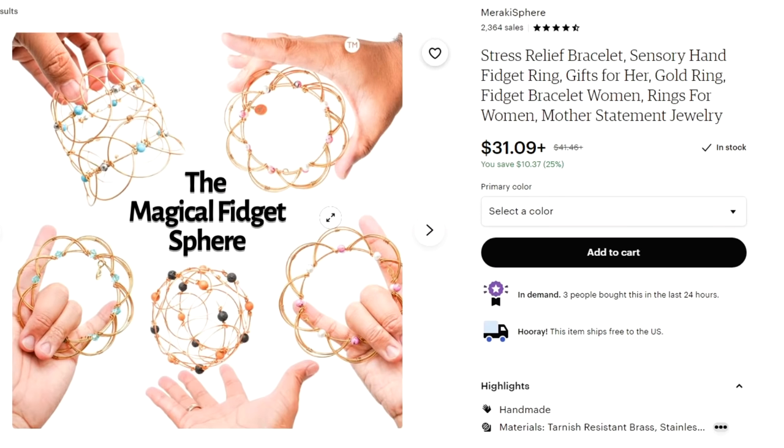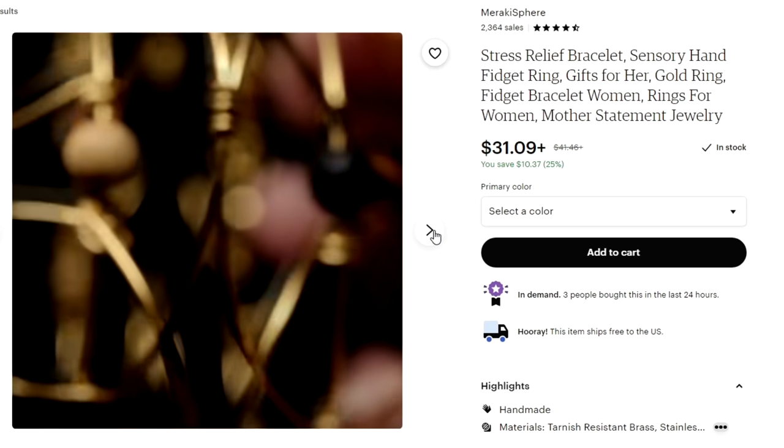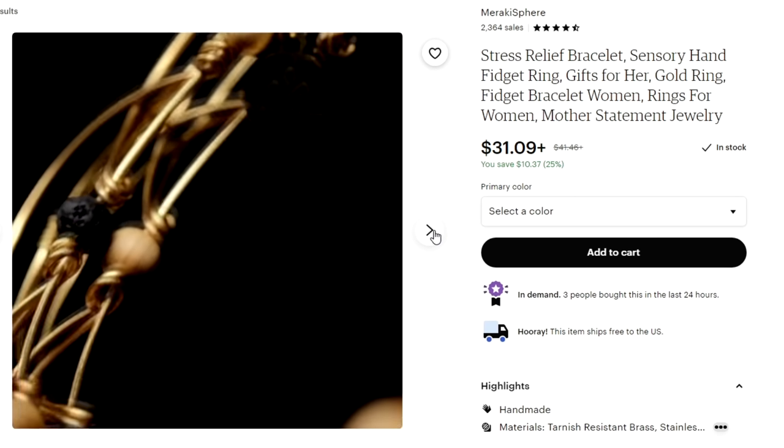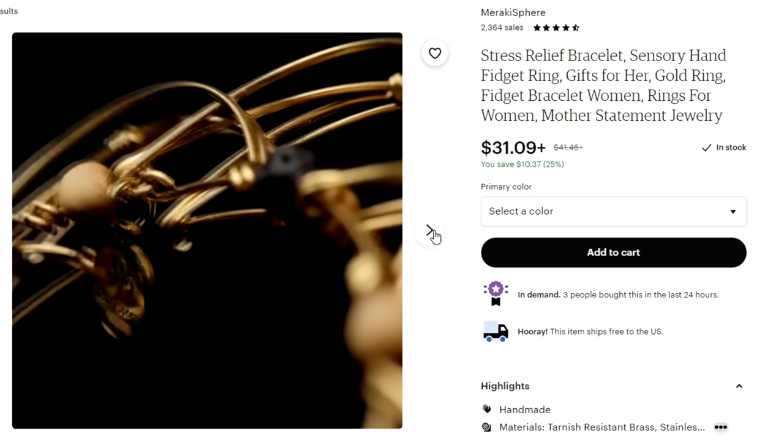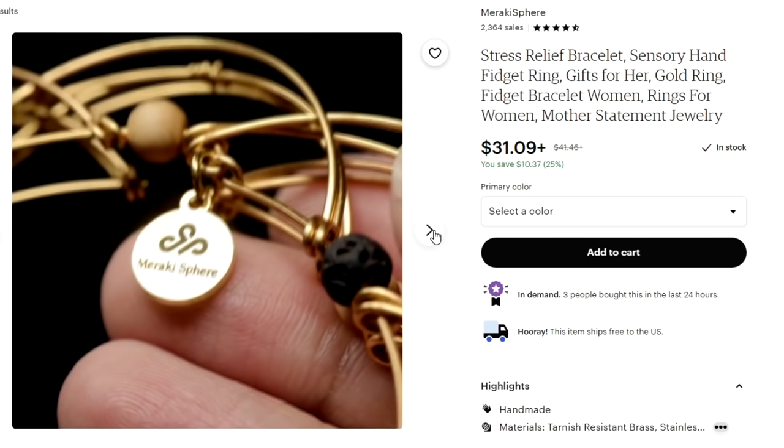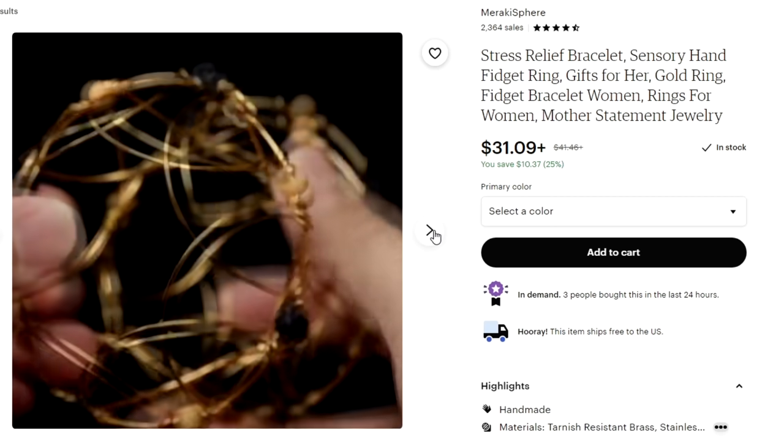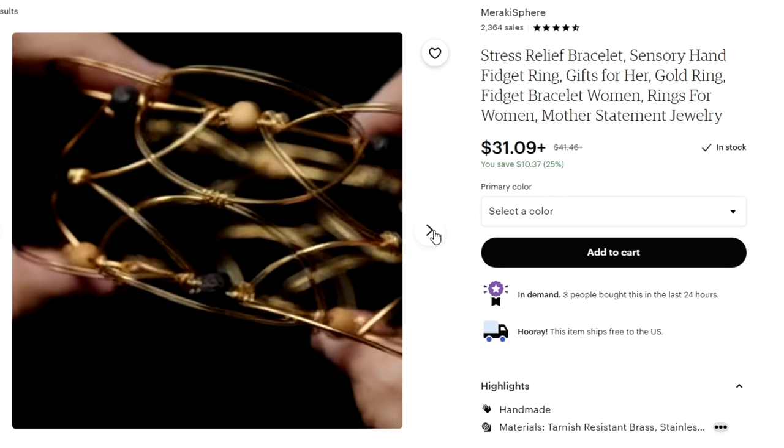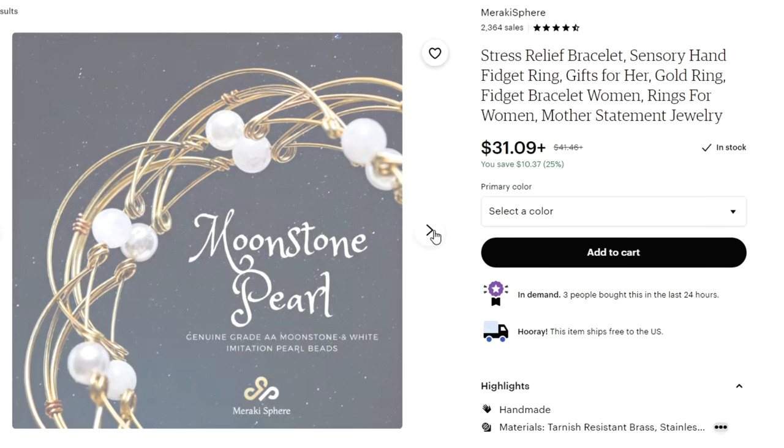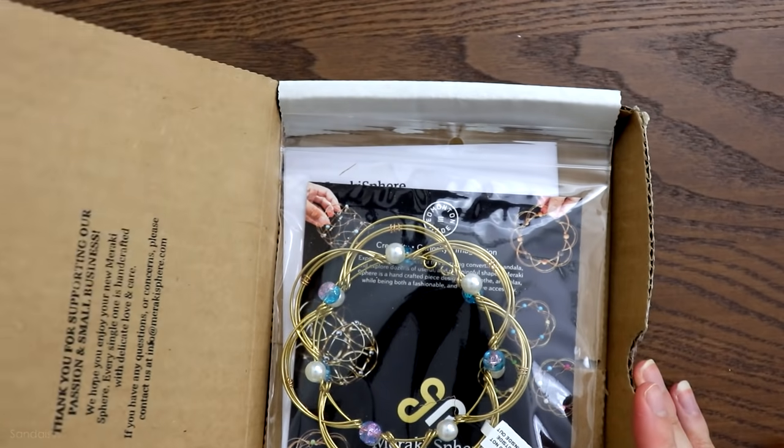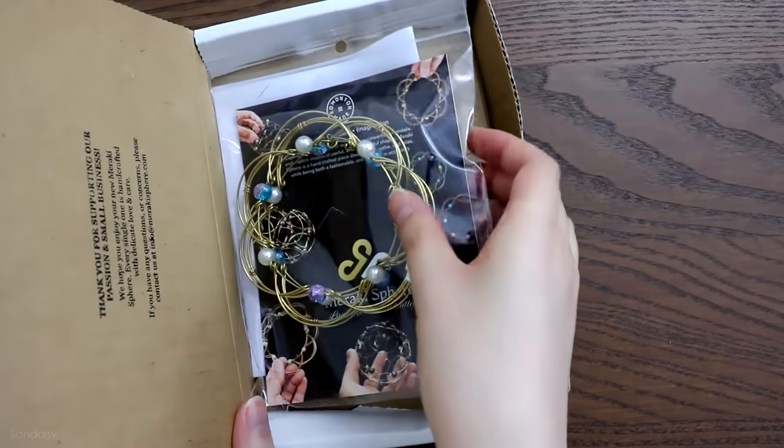I look forward to receiving this the most because I've never seen anything like this. This is called the magical fidget sphere and it just looks like a regular bracelet but it actually can convert to a lot of things. It can be a fidget toy, it can be a candle holder, it could be a lot of things. There's also different colored beads that go with different themes you can choose from. Everything is handcrafted.